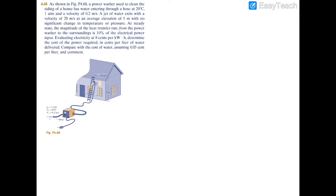We have a problem where water enters a hose at a velocity of 0.2 meters per second, a temperature of 20 degrees Celsius, and a pressure of one atmosphere. It then enters a power washer, which spits out the liquid water at a faster velocity of 20 meters per second and at an elevation of five meters above where the power washer is.